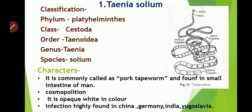Taenia solium classification: phylum is Platyhelminthes; class is Cestoda; order is Taeniidae; genus is Taenia; and species is solium.